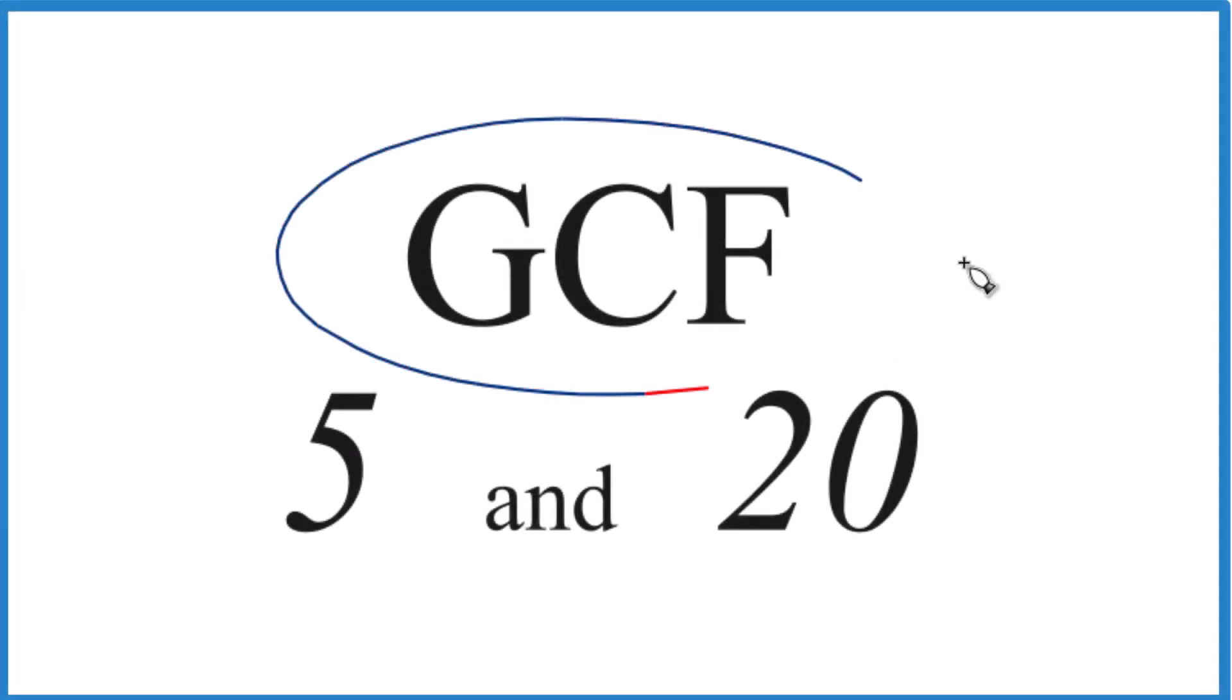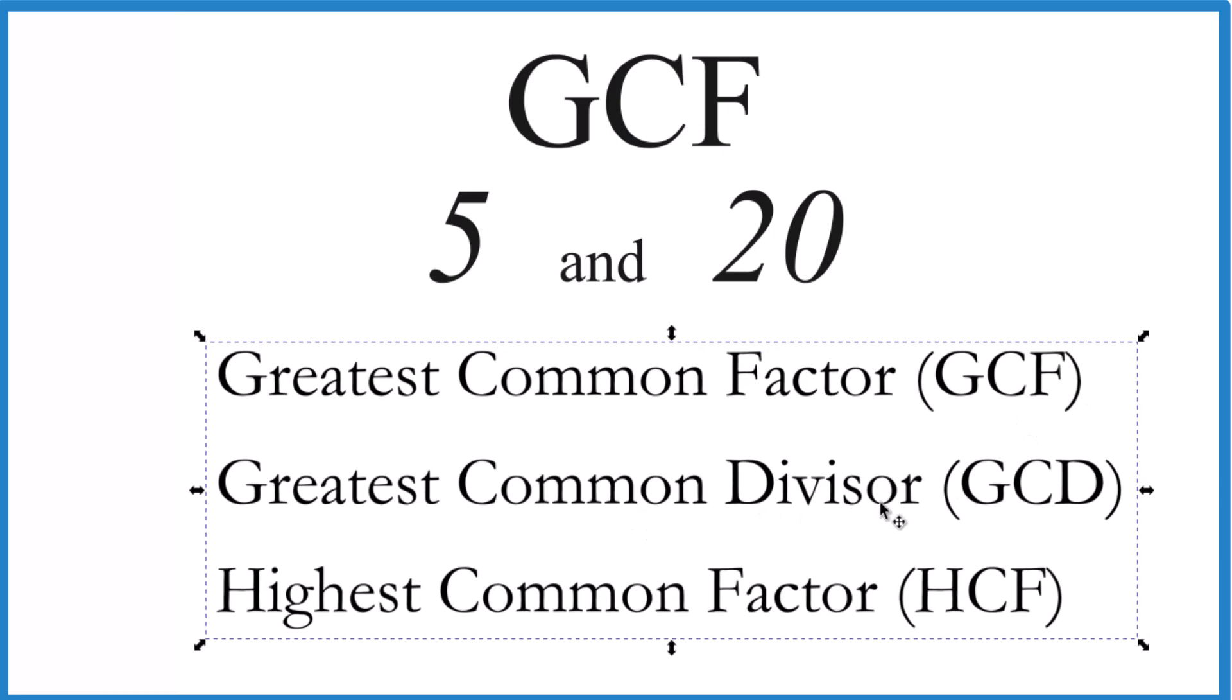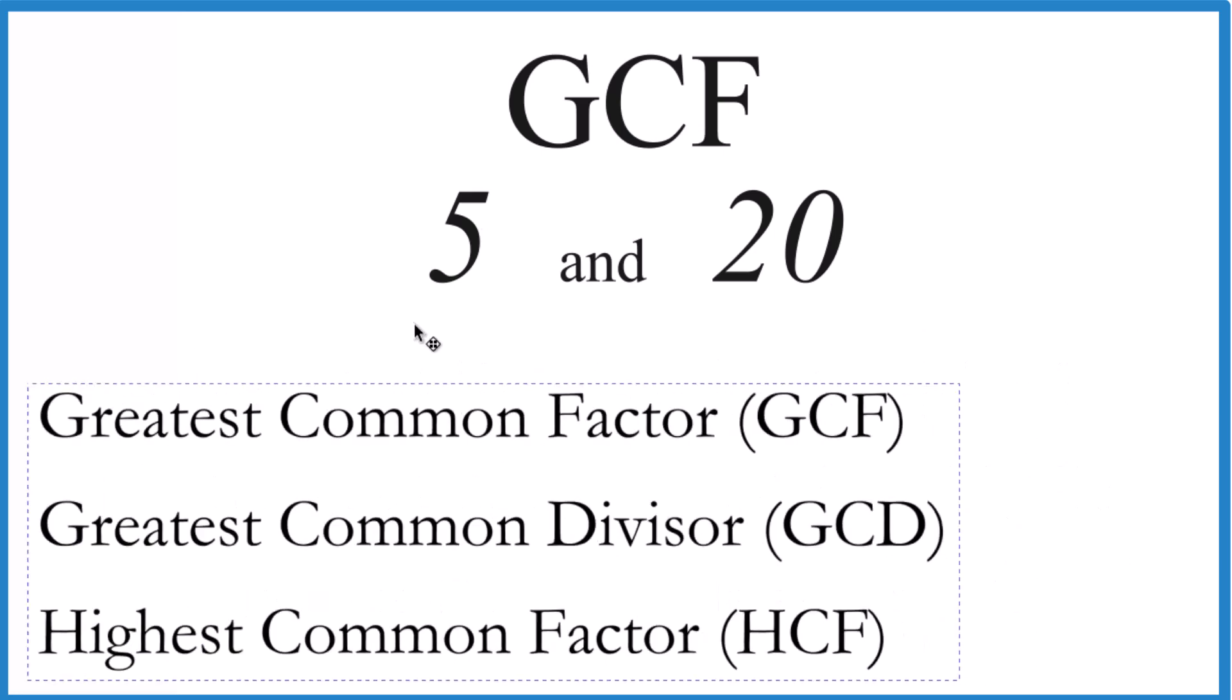So here's how we can find the greatest common factor for 5 and 20. The greatest common factor, sometimes that's called the greatest common divisor or highest common factor. I like greatest common factor, I'm going to go with that.